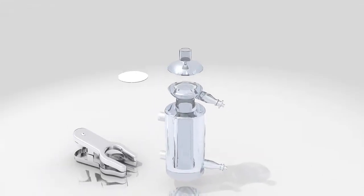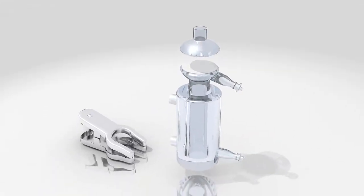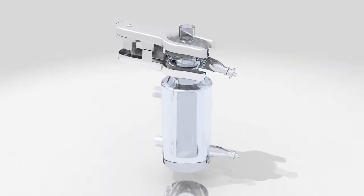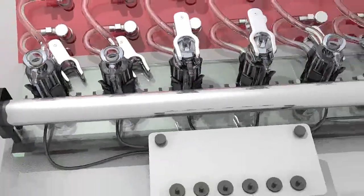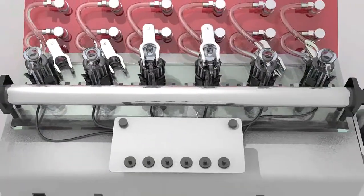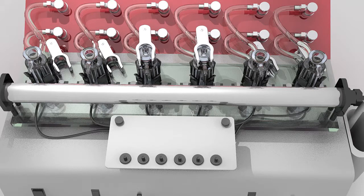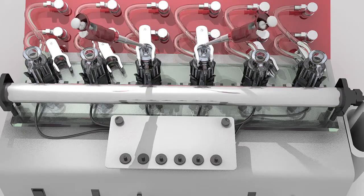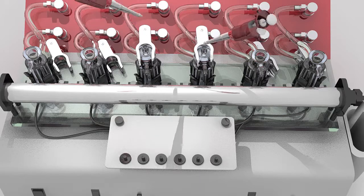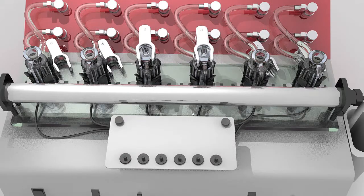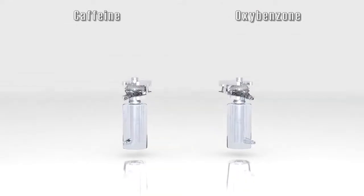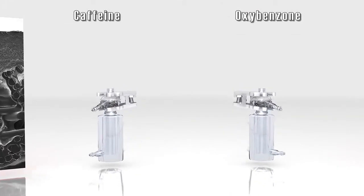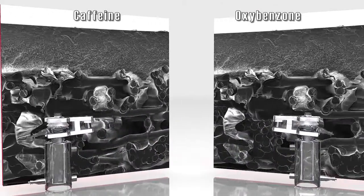Simply insert the Stratum membrane between the donor and receptor compartments of the Franz cell. Or attach a transdermal patch directly to the Stratum membrane. You're ready to begin testing. If you're testing a solution or cream, add it to the donor compartment.